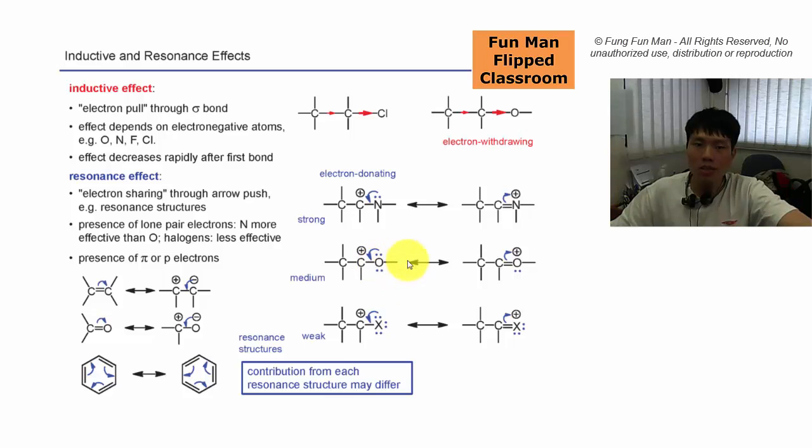Oxygen can do likewise, but just now I mentioned that oxygen is a poor electron pair donor. Halogens are quite weak because something doing that is not that stable.